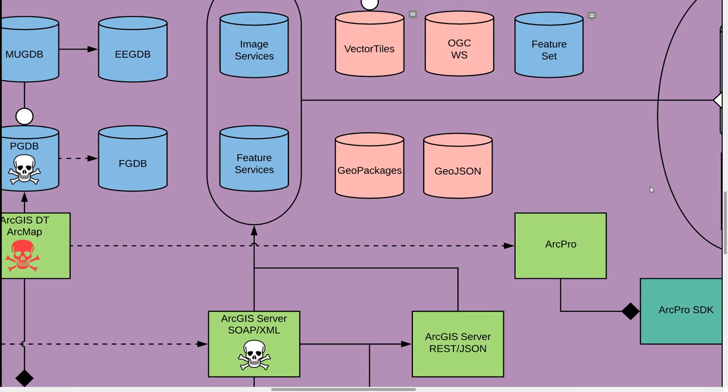Jumping up top to look at more formats: we have the personal geodatabase on the left — that was an Access file, not very scalable in size or stability. It gets replaced with the file geodatabase, which you see a lot of today. You can also see enterprise-enabled geodatabases in bigger organizations with advanced or enterprise licensing. The enterprise-enabled geodatabase is essentially the file geodatabase stored in a relational database such as Oracle, SQL Server, or PostgreSQL.